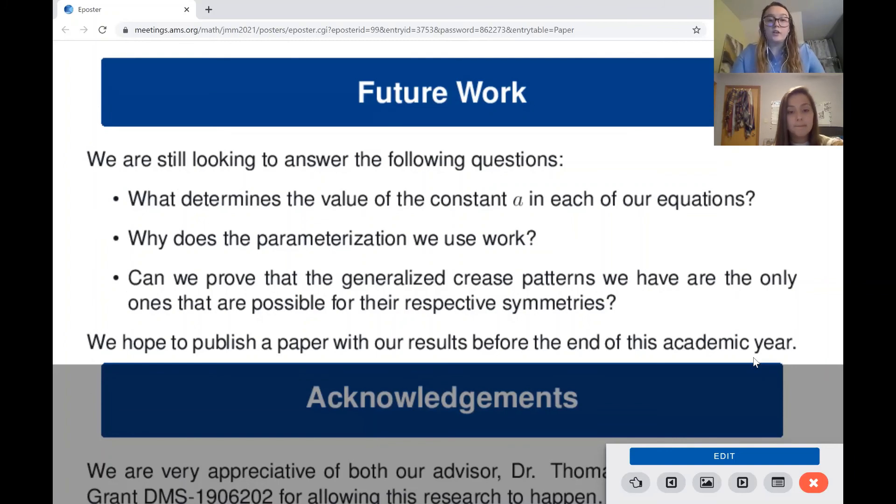From here, we also have a couple questions that we want to answer. One of them being what determines the value of the constant a in each of our equations. When we parameterize, we always use some sort of constant. We've seen that it's either been 2 or 4, so we want to determine what makes that happen. We also want to investigate why the parameterization we use works. So we use the parameterization using tangent, but we want to know where that comes from from all the math.